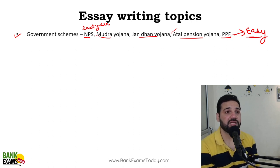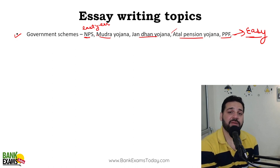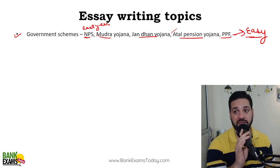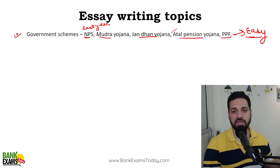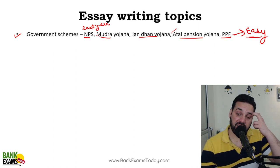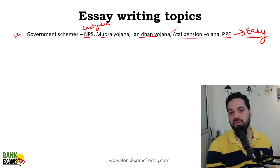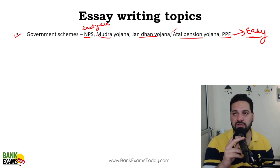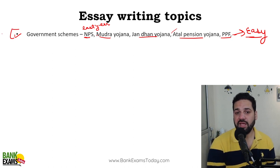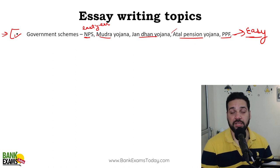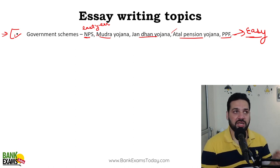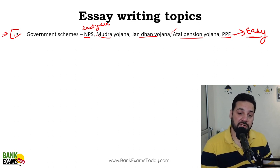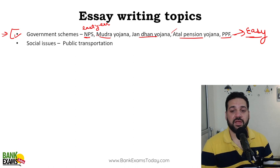Writing an essay on a government scheme is very easy — you just have to explain the scheme and give your opinion. Writing an essay on a general topic is actually more difficult. Many students prefer to write on a general topic thinking no factual mistakes will creep in. But these government scheme topics are actually more scoring. According to me, overconfidence about general topics is wrong — government scheme essays give better marks if you know the topic.